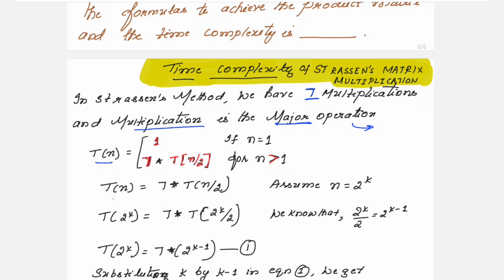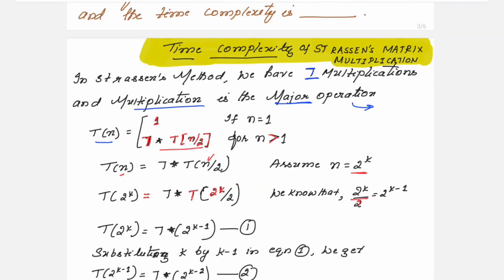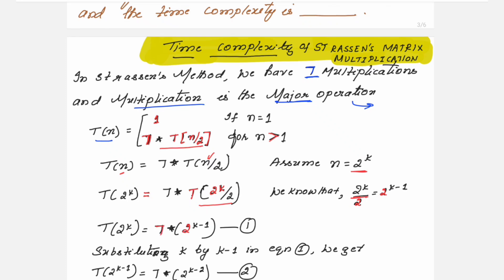Taking the equation T(n) = 7·T(n/2), and knowing that n = 2^k, we substitute to get T(2^k) = 7·T(2^(k−1)). This is equation 1. Next, substituting k with k−1 in equation 1 gives T(2^(k−1)) = 7·T(2^(k−2)), which is equation 2.